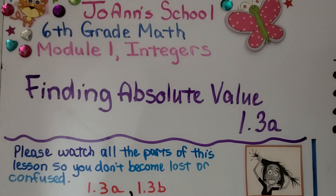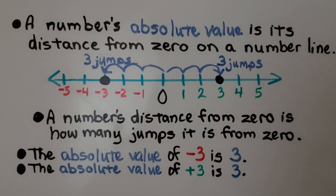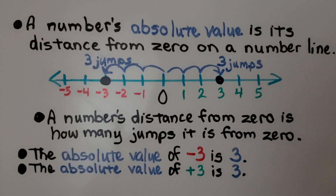Lesson 1.3a: Finding Absolute Value. A number's absolute value is its distance from zero on a number line — it's the number of jumps. A number's distance from zero is how many jumps it is from zero.